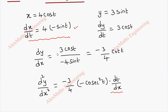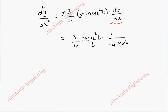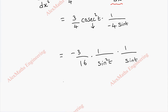We substitute the reciprocal value and cancel the two minus signs. So this becomes (3/4)·csc²(t)·(1/(−4sin t)). The csc²(t) moves to the denominator, giving −3/16, and combined with 1/sin²(t)·1/sin(t), we get d²y/dx² = −3/(16sin³t).